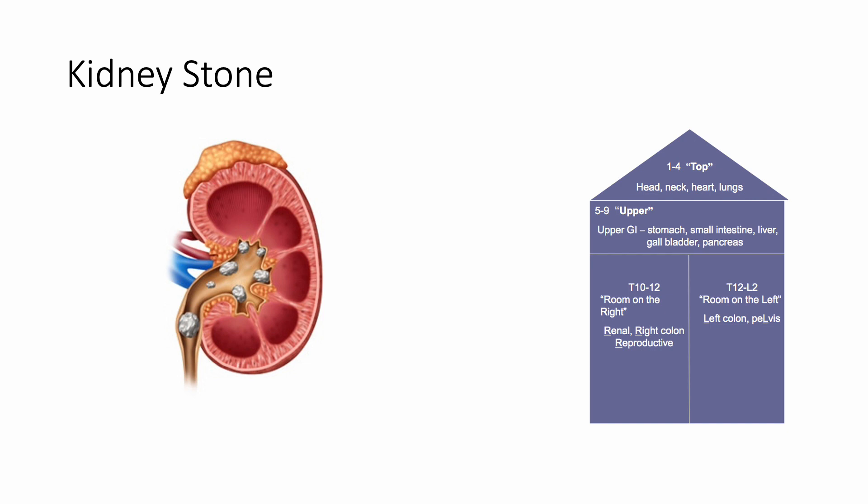A person presents to the ER with a kidney stone — bloody urine, positive CVA tenderness, excruciating pain. CT scan finds a stone in the ureter. It doesn't matter if it's left or right. They'll ask where the viscerosomatic reflex or sympathetic tension is going to be. Remember House of Golden — it's going to be in the renal section, so T10 through T12.